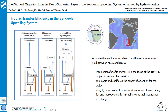As part of the TRAFFIC project we're investigating trophic transfer efficiency in the Benguela upwelling system, one of the four eastern boundary upwelling systems in the world. Previous research has suggested that there is a difference in fisheries yield between the northern and the southern subsystems despite having similar primary production rates.